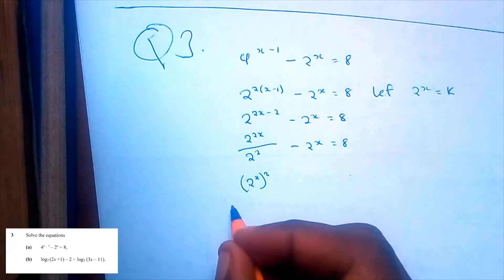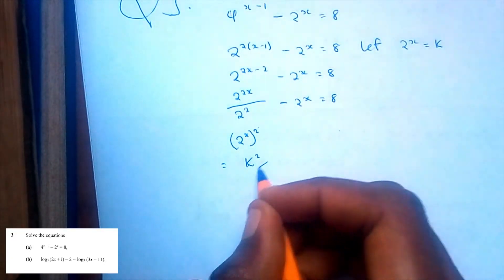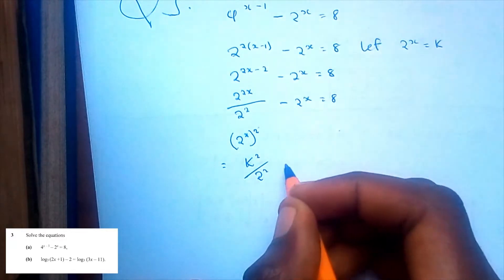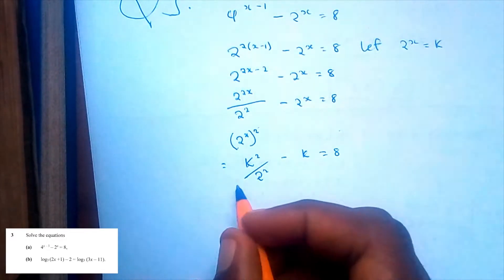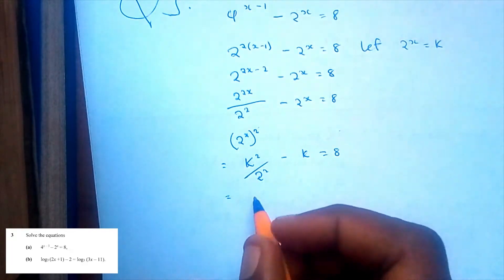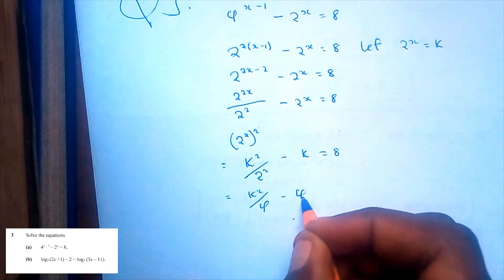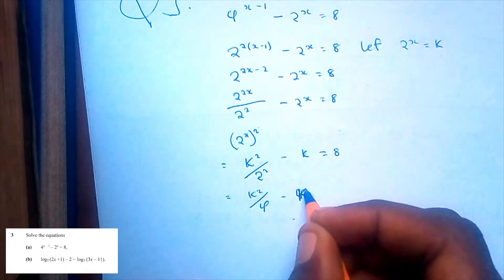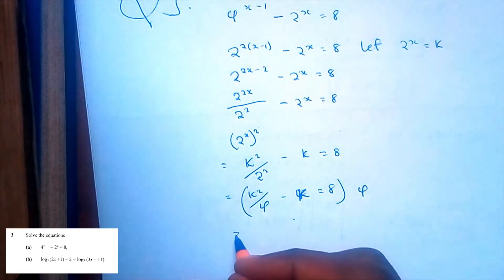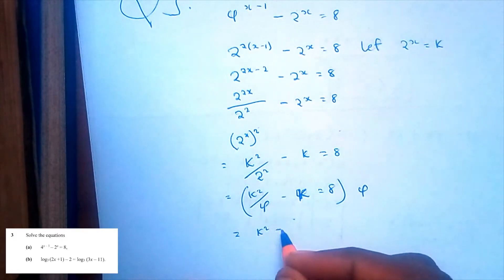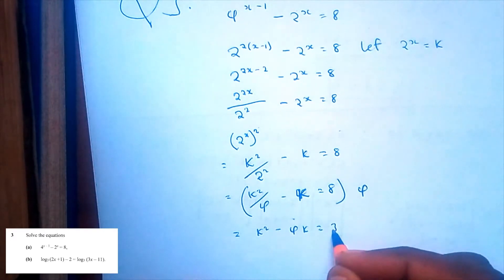So we write this to be equal to k squared over 2 to the power 2, minus k, is equal to 8. This is the same as k squared over 4 minus k is equal to 8. We multiply by 4 to get rid of the fraction, so that would be k squared minus 4k is equal to 32.